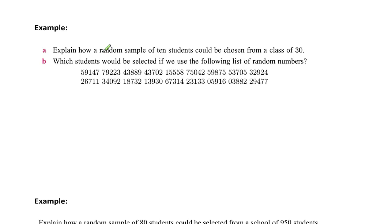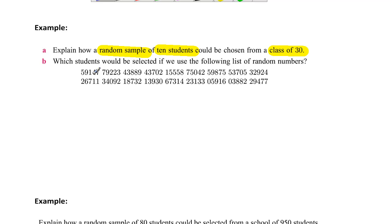We want a random sample of 10 students to be chosen from a class of 30. What you would first of all do is give every student a number from one to 30. So every student would be numbered. Then you would start going through the random numbers. Let's say this was the first lot of numbers we would select. You'll notice that if you start at 59, you can't use that — you definitely couldn't because you've got a class of 30. So 59 is not going to work. You just keep moving along until you can get 10.